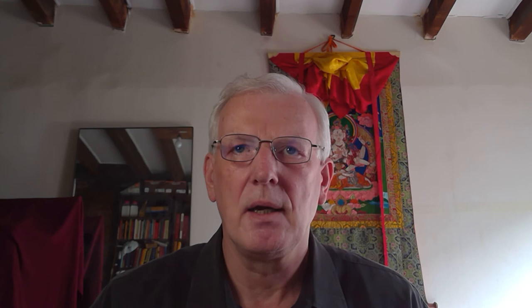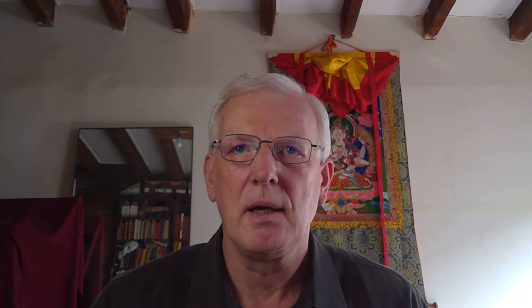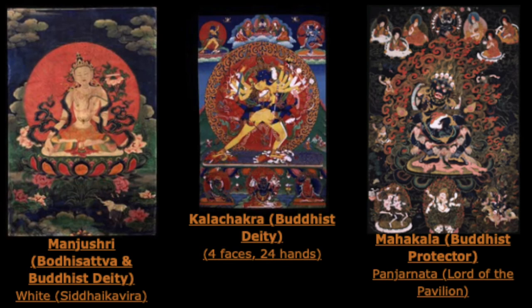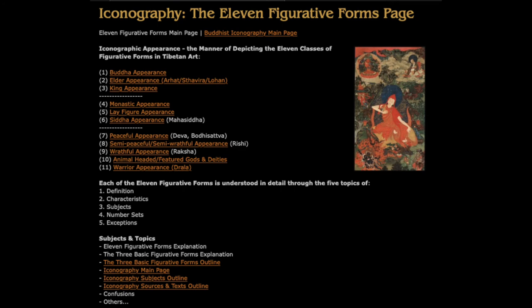So we have Tantric figures which are iconic, and Sutrayana and Mahayana figures which are non-iconic. Based on that, we have the three moods: the peaceful, semi-peaceful, and wrathful. Then we have the eleven figurative forms for all figures — a broad listing — and then the eleven types of deities.